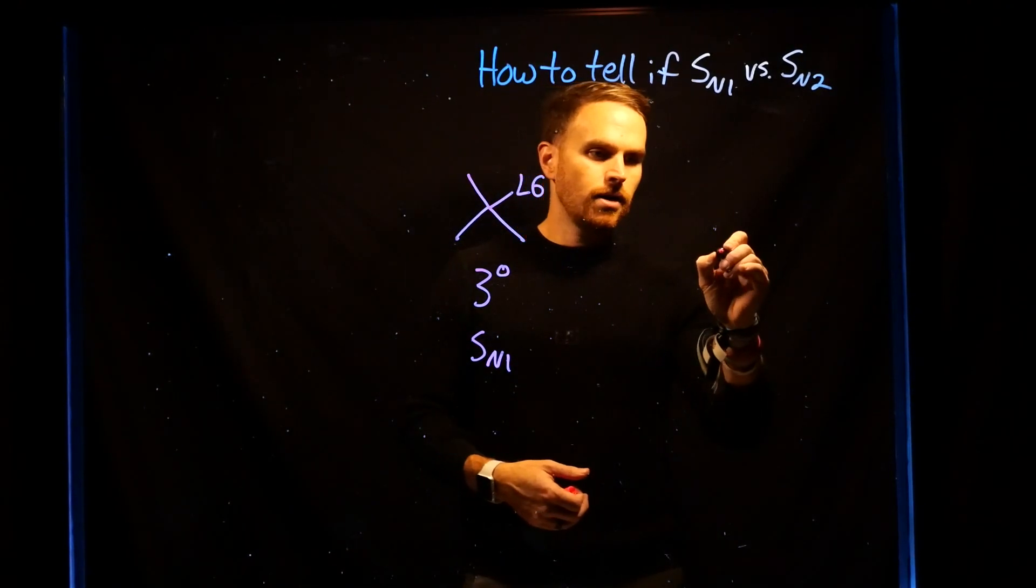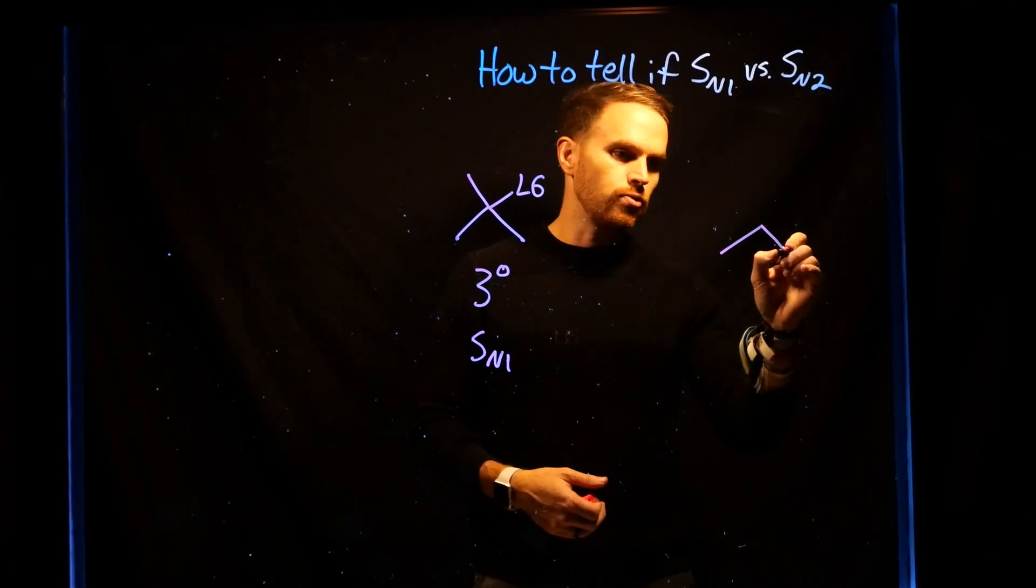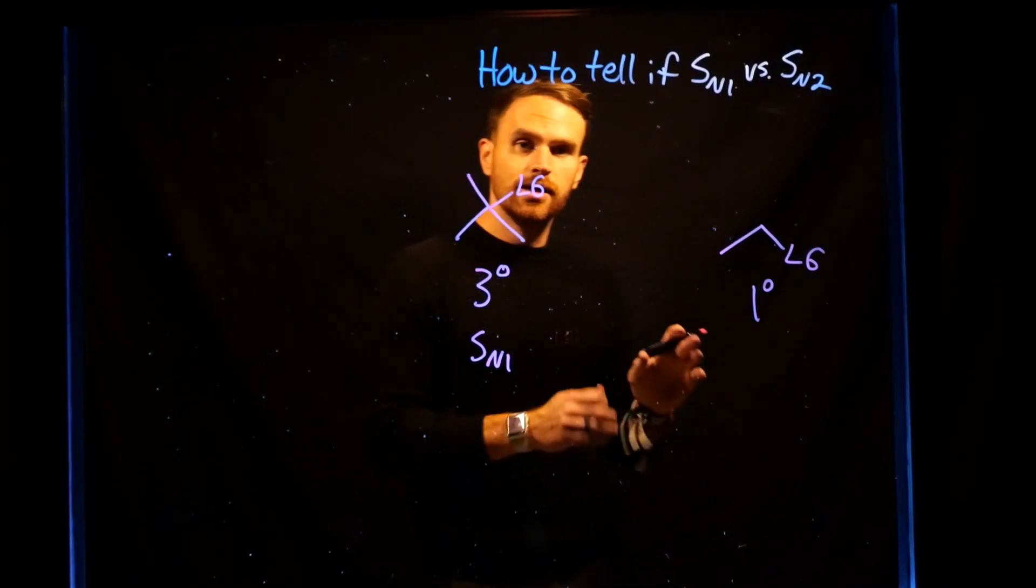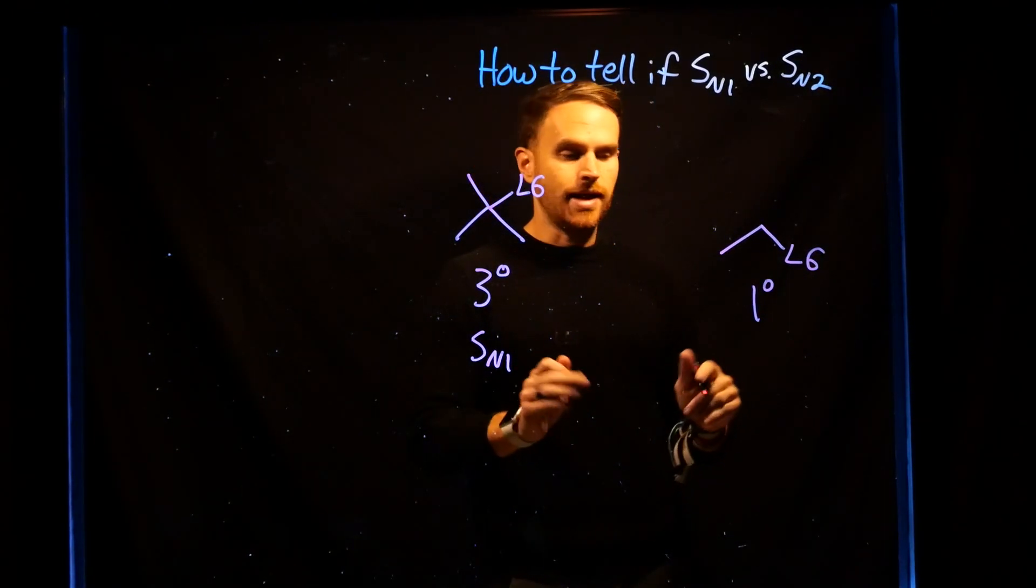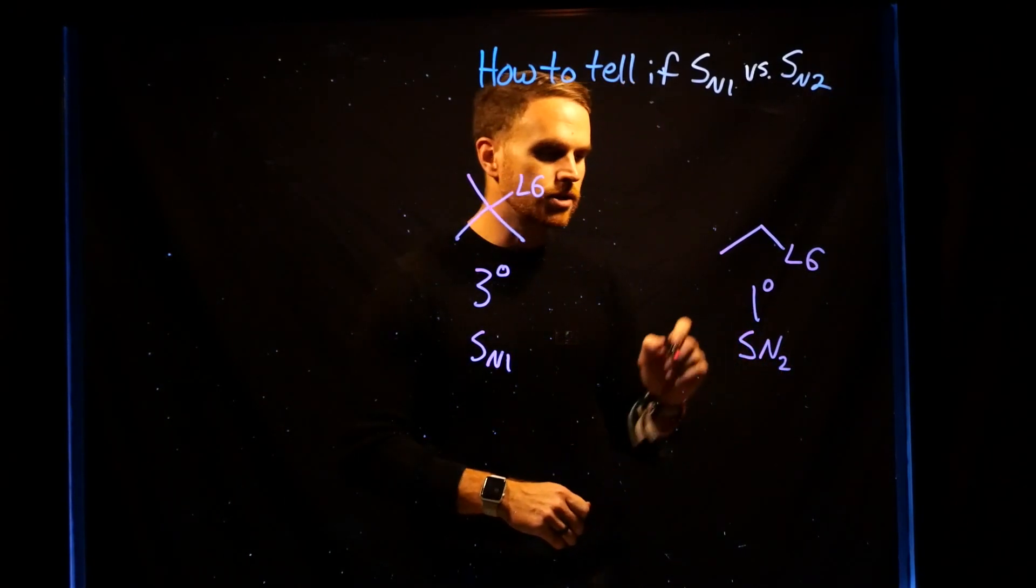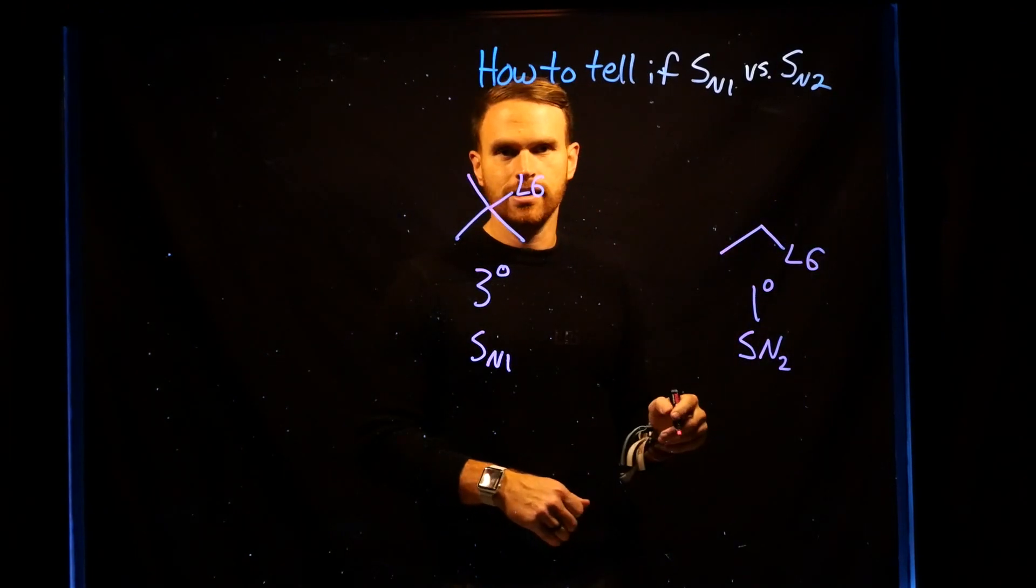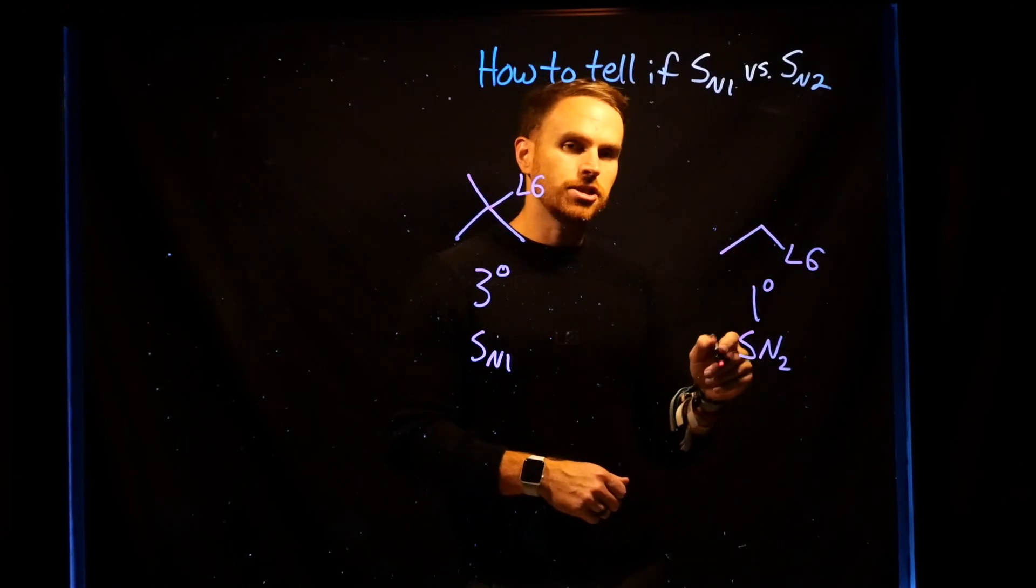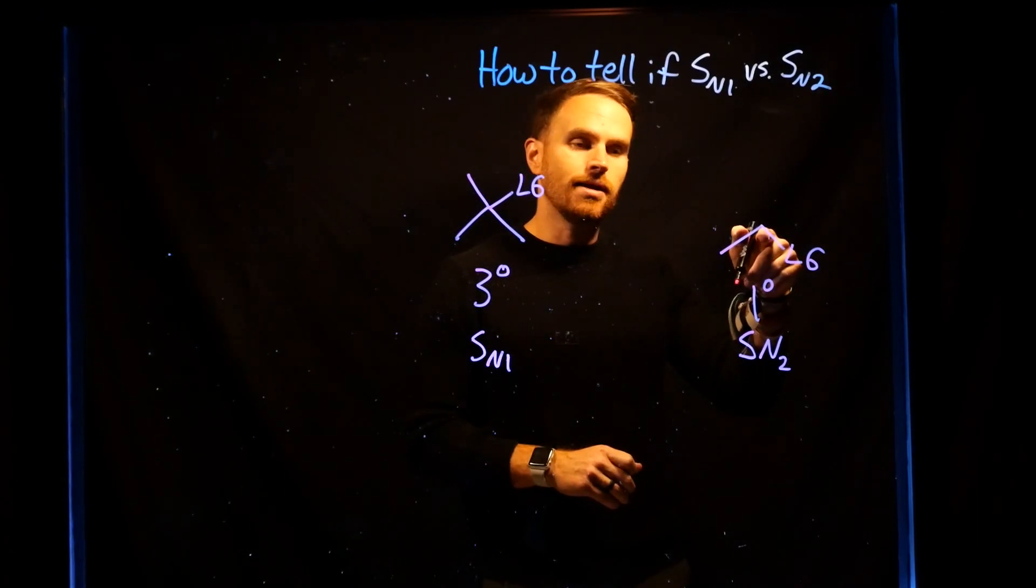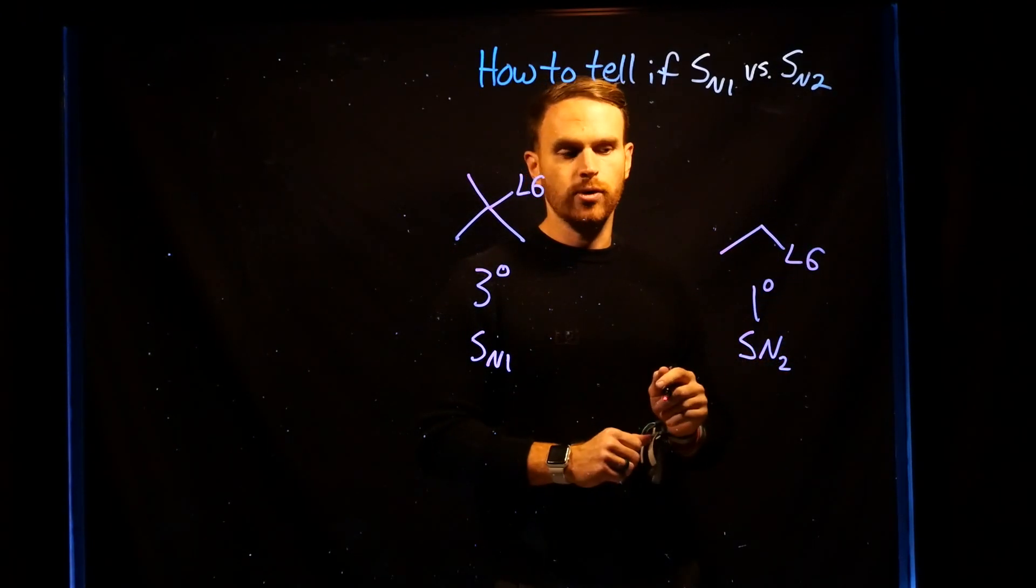On the other side, if you have a leaving group that is on a primary carbon, this is always going to form via an SN2 reaction. There's more room for the nucleophile to come in and attack the electrophile. In addition, if this were to try and proceed via an SN1 reaction, you would get a very unstable primary carbocation.